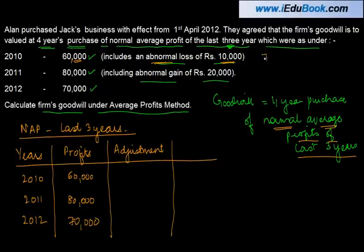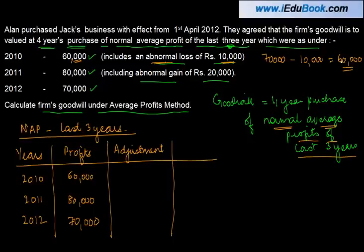For example, there was a profit of 70,000 which the firm made. Out of that, an abnormal loss of 10,000 was deducted to arrive at the reported profit of 60,000. To normalize these profits — to find what would have been earned if this abnormal item did not happen — I add back 10,000. This is the abnormal loss adjustment.